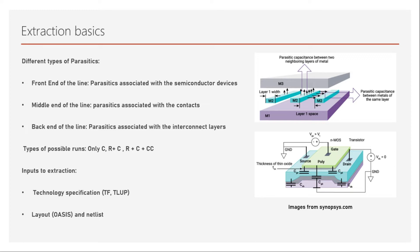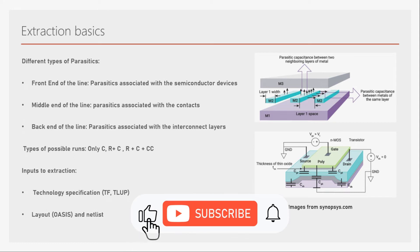Inputs for extraction include technology specifications such as unit capacitance and unit resistance values, which come from the foundry and are used for rule-based extraction. The TLup (table lookup) file or technology file is also required, along with the design layout represented in formats such as DB or OASIS — a compressed form of GDS widely used in design.